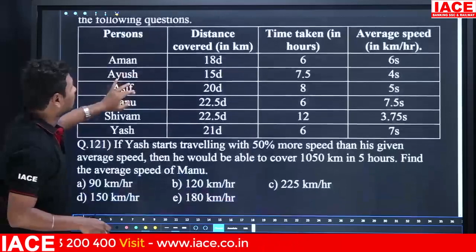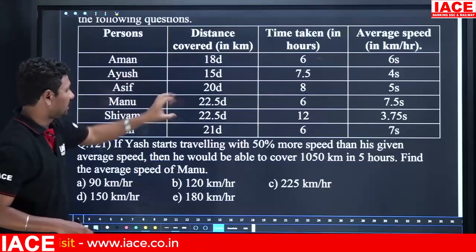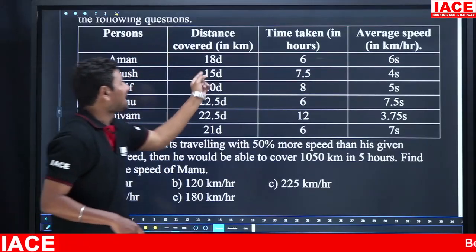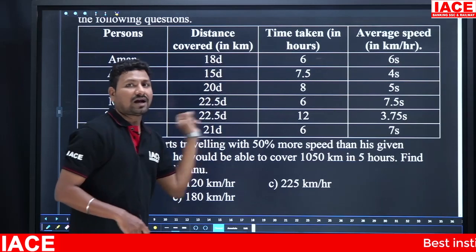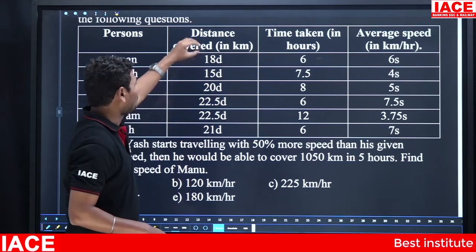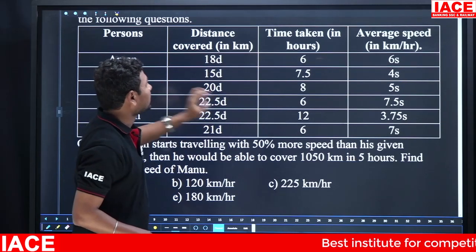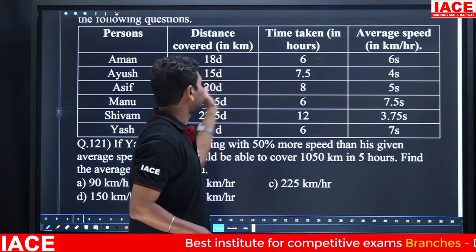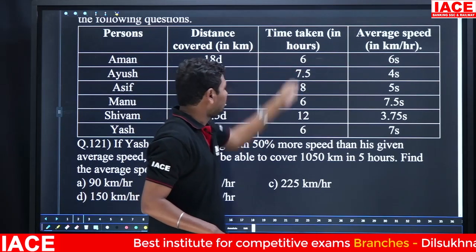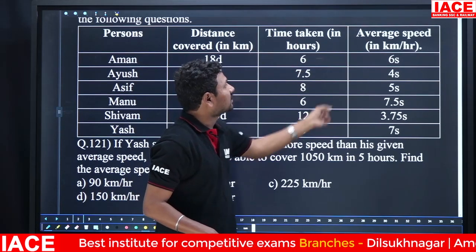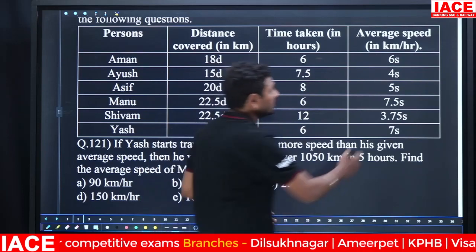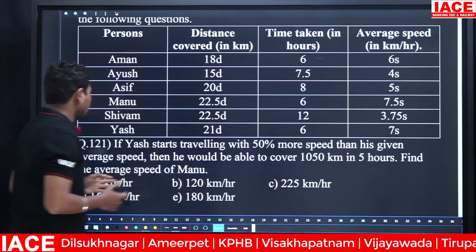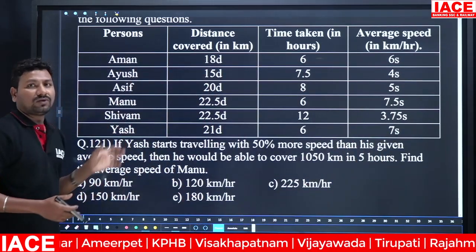Then look at the table here. Based on the table we have questions. Aman's covered distance is 18D, where D is a constant term for all variables. The time taken by all persons individually is mentioned, and the average speed is also mentioned in the table. Whatever the answer we need, we have to focus on this table.